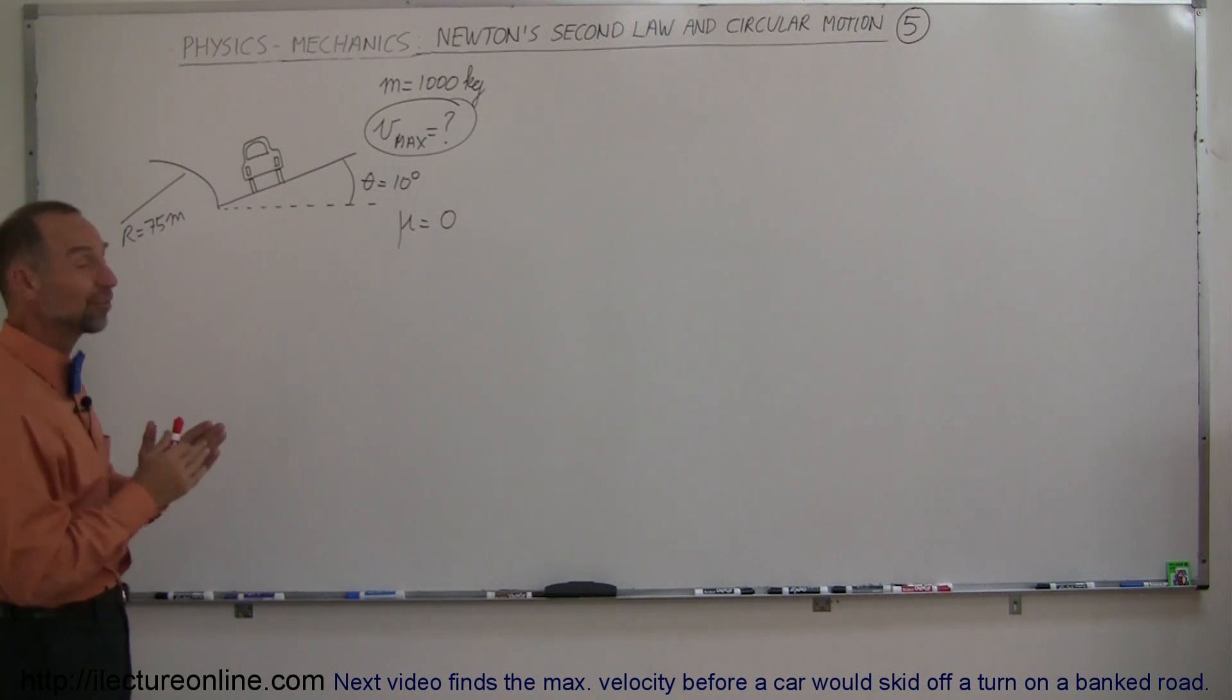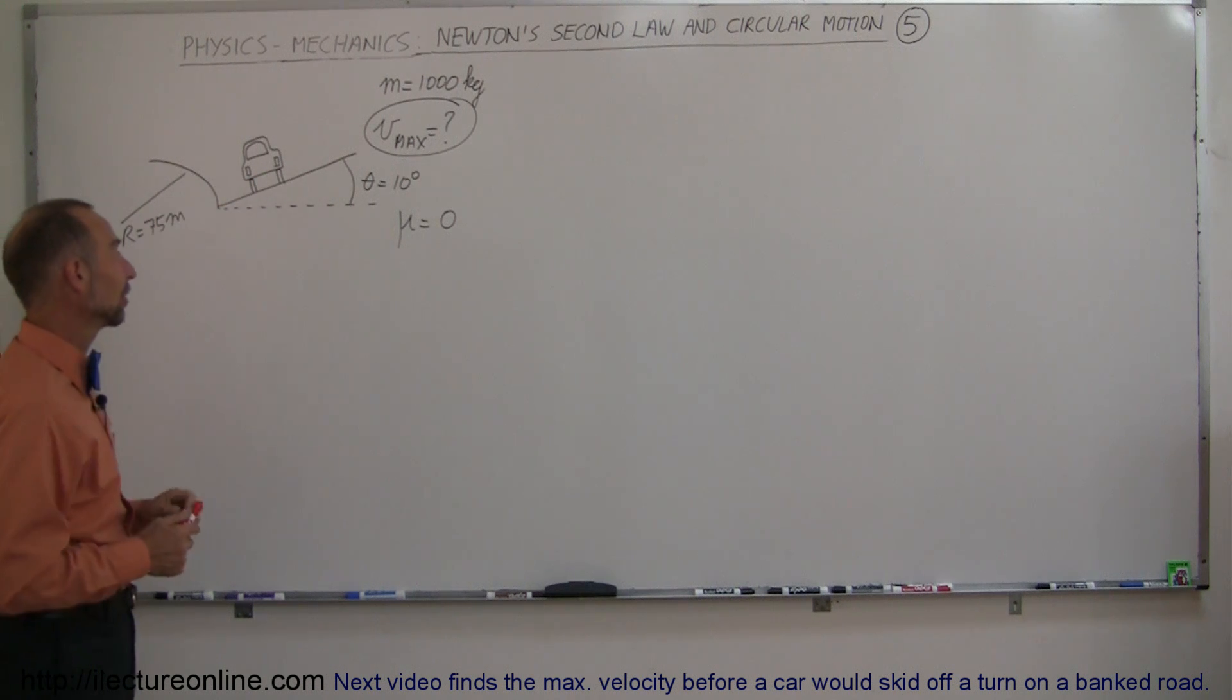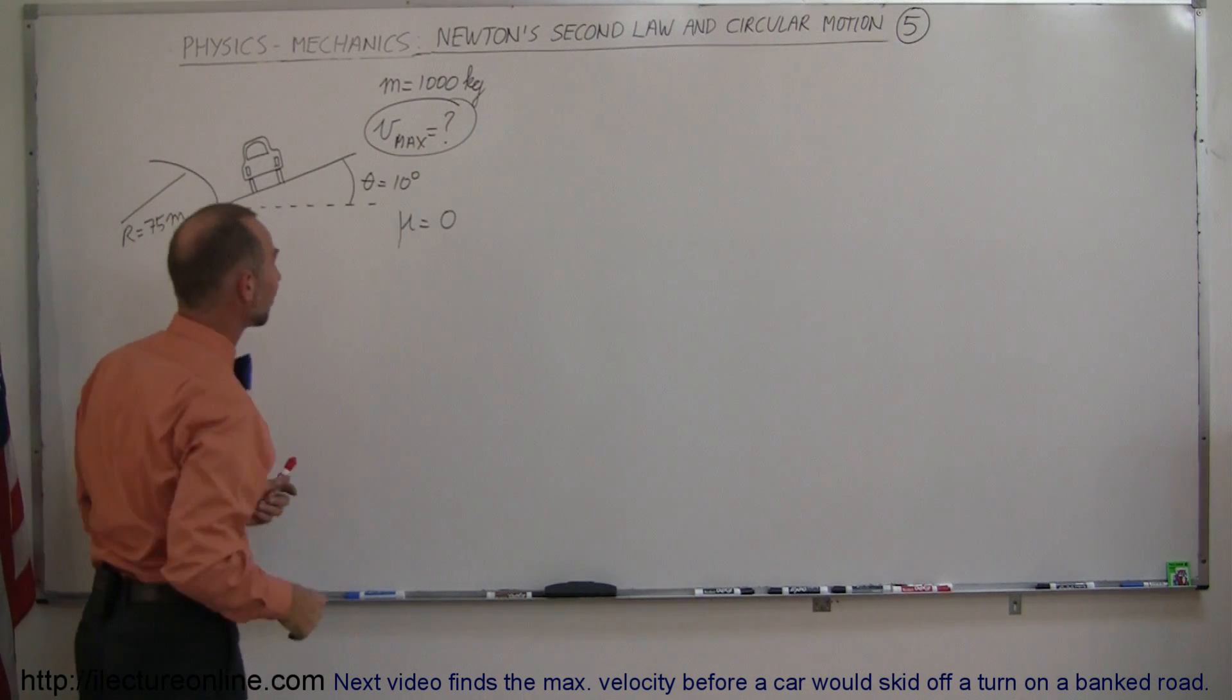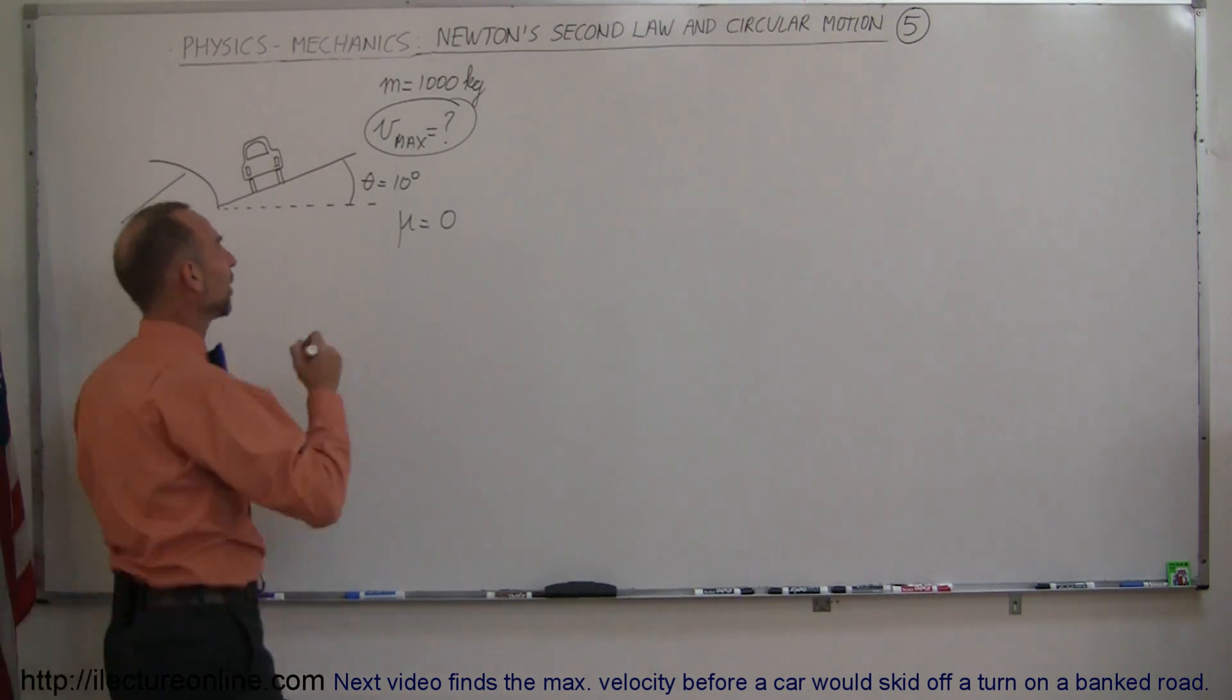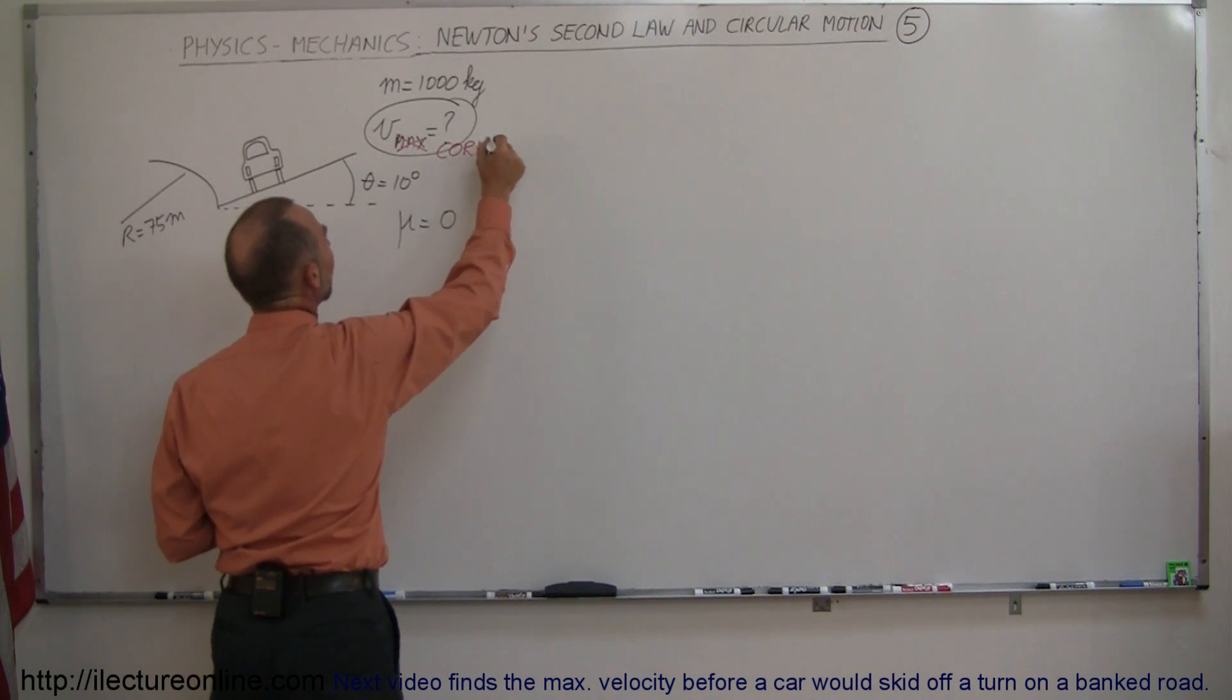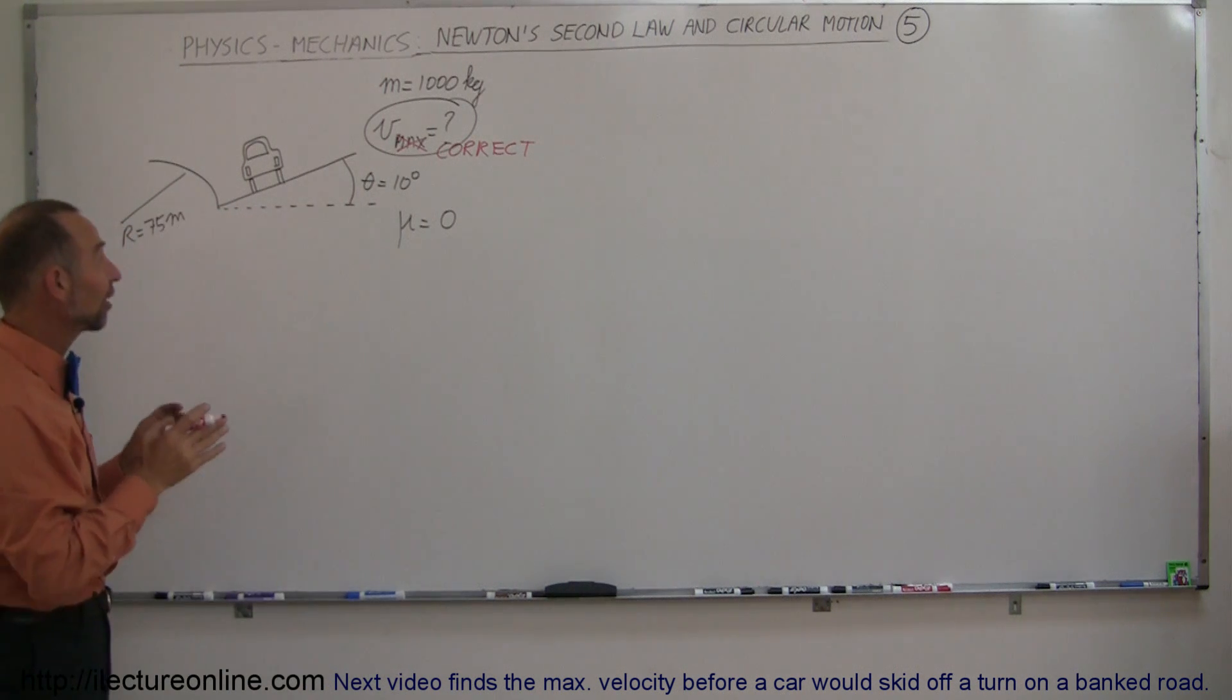Now obviously if the car was not moving at all, the car would simply slide down to the inside of the curve right here. If the car was moving too fast, the car of course would be sliding up the incline and fall off on the side there. So the car has to be going just right, so we're not really looking for the maximum velocity, we're looking for the correct velocity. There's only one velocity that exists that keeps this car from sliding inward or from sliding outward, and so what is that velocity?